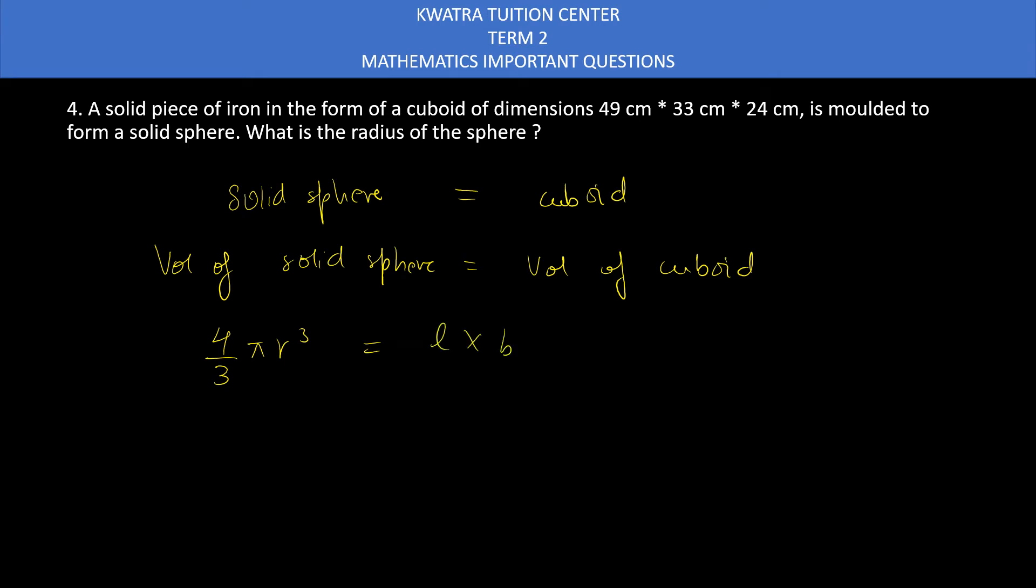Volume of solid sphere is 4 by 3 pi r cube. Volume of cuboid is L into B into H. So 4 by 3 as it is, pi is 22 by 7, r cube we don't know. L into B into H: L is 49, B is 33, H is 24. Now take the terms to the right side. You can find the value of r cube. It will be 49 into 33 into 24 into 7 into 3, divided by 4 and 22.